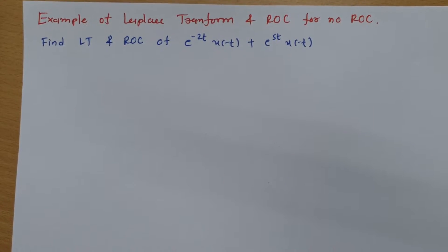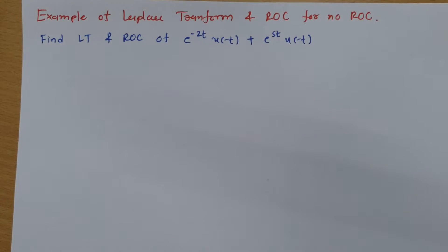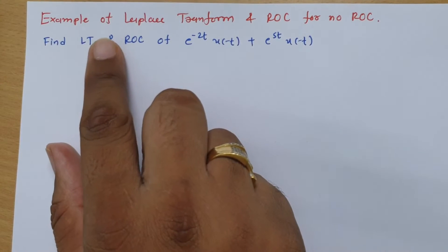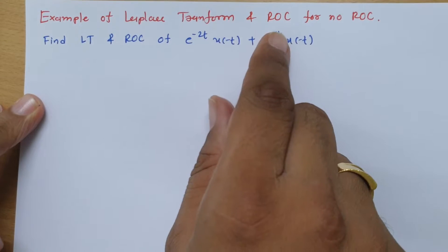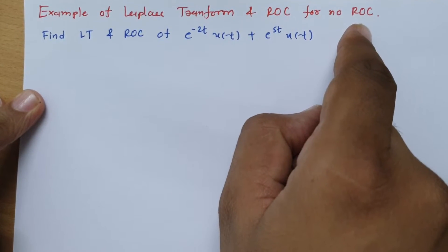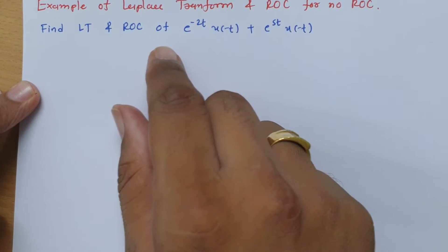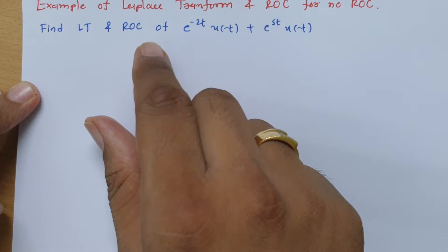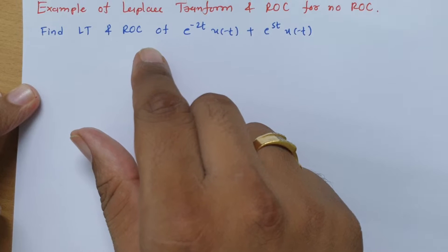Welcome to the signal and system lecture series. In this session I will be explaining an example of Laplace transform and ROC, specifically for the no-ROC case. You will see how no ROC is possible for a given signal.